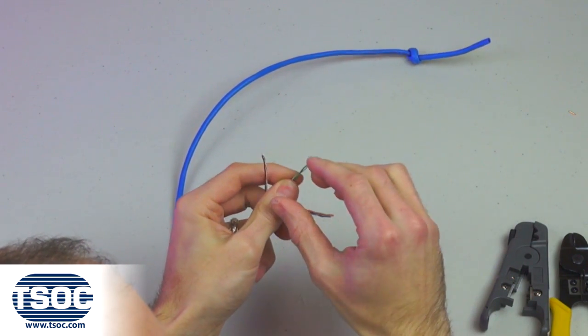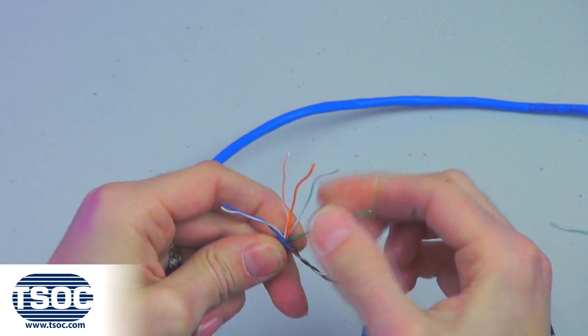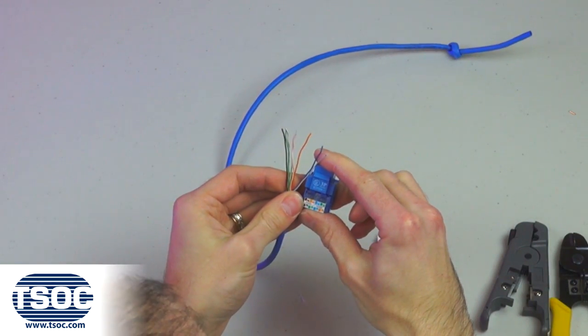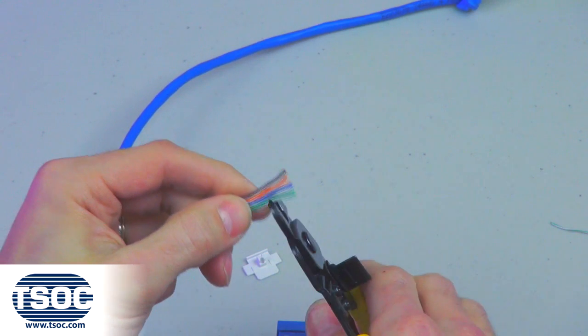Separate and straighten each pair of the CAT-5E UTP 4-Pair Cable according to the required wiring code. Use the side cutter to trim the insulated conductors.